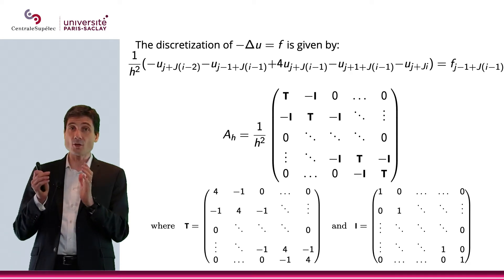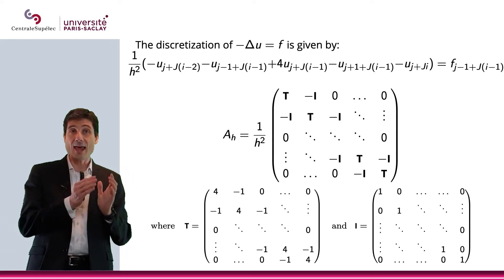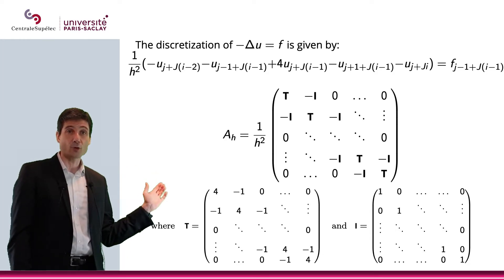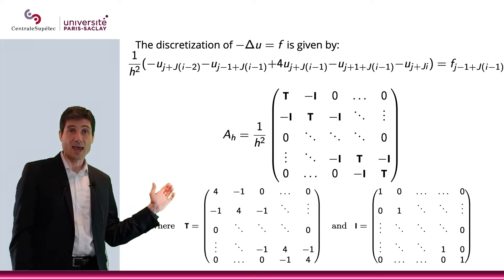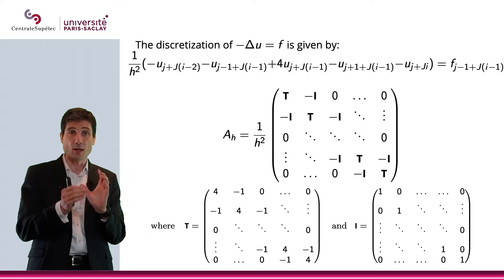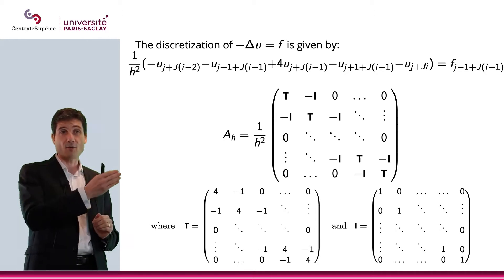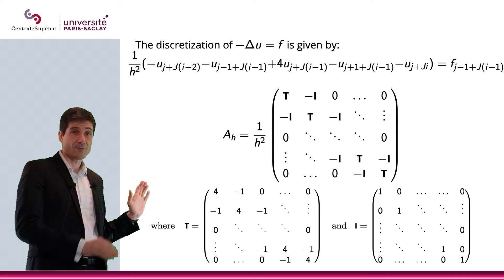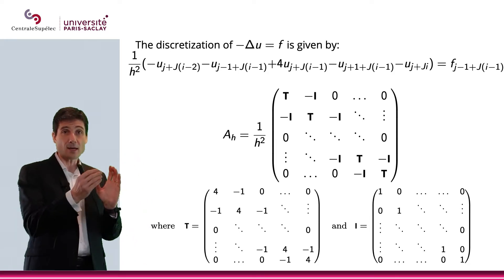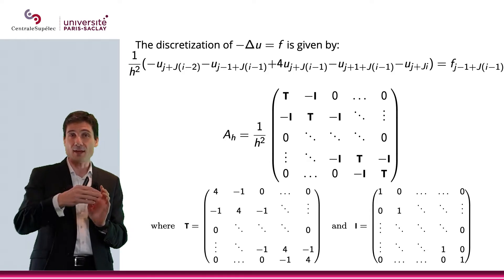When we put this in matrix form, it means that we're going to have A_h u_h equals f_h. Here is the shape of the matrix A_h. That will be one over h squared. On the diagonals, we're going to have blocks. These blocks will be composed of fours on the diagonal, negative one above, negative one below, and then we will have zeros. After that, we'll have blocks with negative identity — basically negative ones on the diagonal — and then the rest is zero.